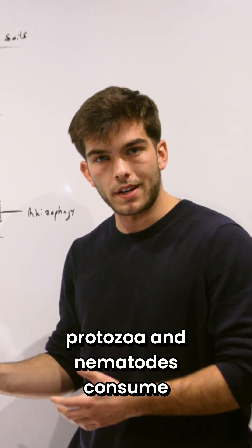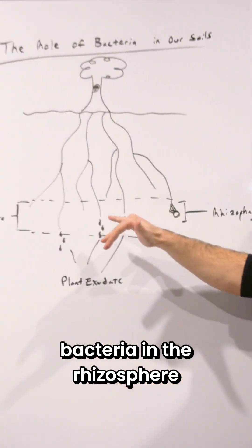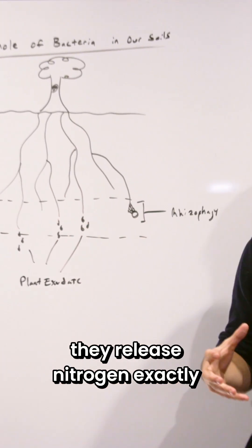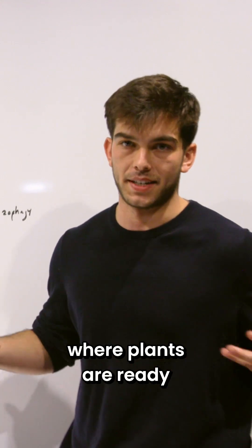When predators such as protozoa and nematodes consume bacteria in the rhizosphere, they release nitrogen exactly where plants are ready to take up nutrients.